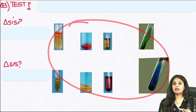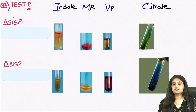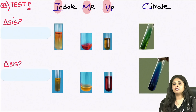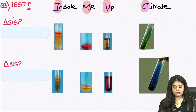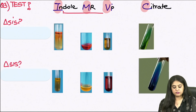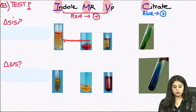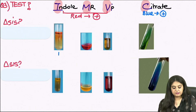Moving on to question 3: these are a classical set of test tubes, more important for NEET-PG than FMG exam, and this is known as the IMVIC testing. IMVIC stands for I for indole testing, M for methyl red, VP for Voges-Proskauer test, and C for citrate utilization test. For the first 3 tubes, a positive reaction gives a red colour, while for citrate a blue colour indicates a positive reaction.